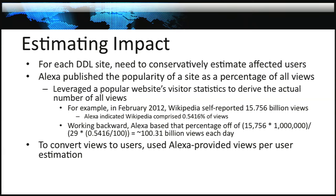Once we've identified that a site results in a drive-by download, we need to estimate the number of affected users. We don't have direct visibility into traffic to those sites, so we use other means. Alexa publishes a site's popularity as a relativized percentage of all views it receives, without publishing the hard number. But you can use statistics self-reported by other sites to derive this number. For example, in February 2012, Wikipedia self-reported about 15.75 billion views, and Alexa reported a corresponding relative percentage — so you work backwards to determine the absolute number and uniformly apply it to all other sites.